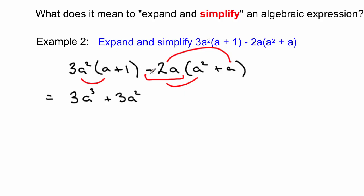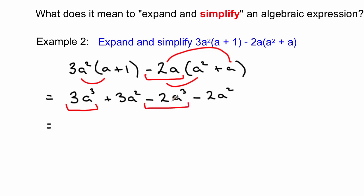You've got a minus here and a positive here that you're going to multiply out. A minus times a positive gives us minus 2 times a times a squared — using our index laws that's a cubed. So we write down a minus 2a cubed. Then it's 2a times a, that's minus 2a squared. Now identify any like terms: there's 3a cubed here and minus 2a cubed — the sign goes with the term — so we can write those together: 3a cubed minus 2a cubed.